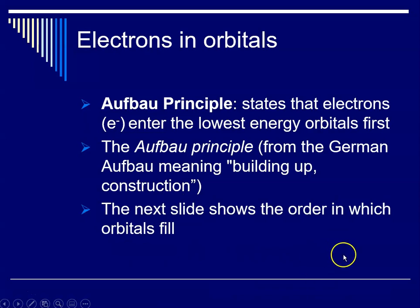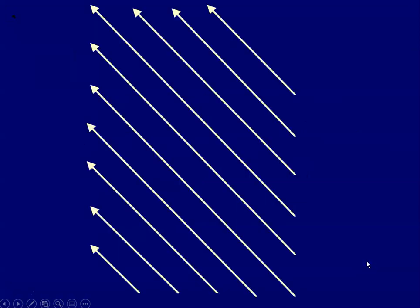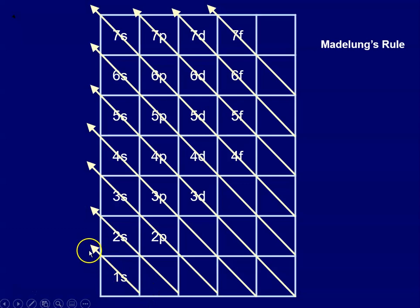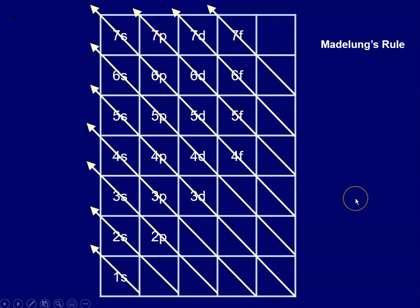The next slide shows the order in which electrons fill into orbitals — sometimes called the Madelung rule diagram, but it follows the Aufbau principle. You can see principal levels 1 through 7, and the order they fill is found using arrows: 1s, then 2s, then 2p, then 3s, then 3p, then 4s.